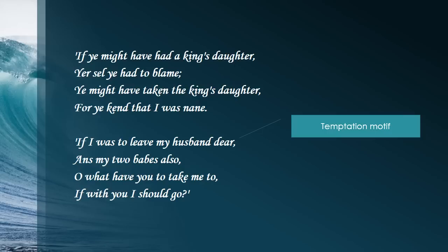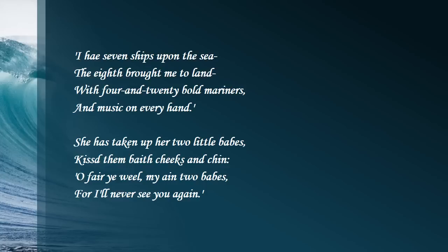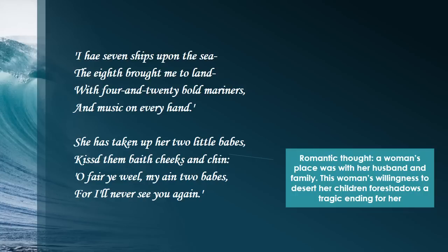We also see very common to ballads and Romantic literature, this temptation motif growing — the evil entity is able to tempt the naive soul away from what is right with promises of treasures, love, and eternal life. Here again, we start seeing the temptation coming, where he's promising her something: 'I have seven ships upon the sea, the eighth brought me to land, with four and twenty bold mariners and music on every hand.' That wins her over. Right away she's ready to say farewell to her children: 'I'll never see you again.'